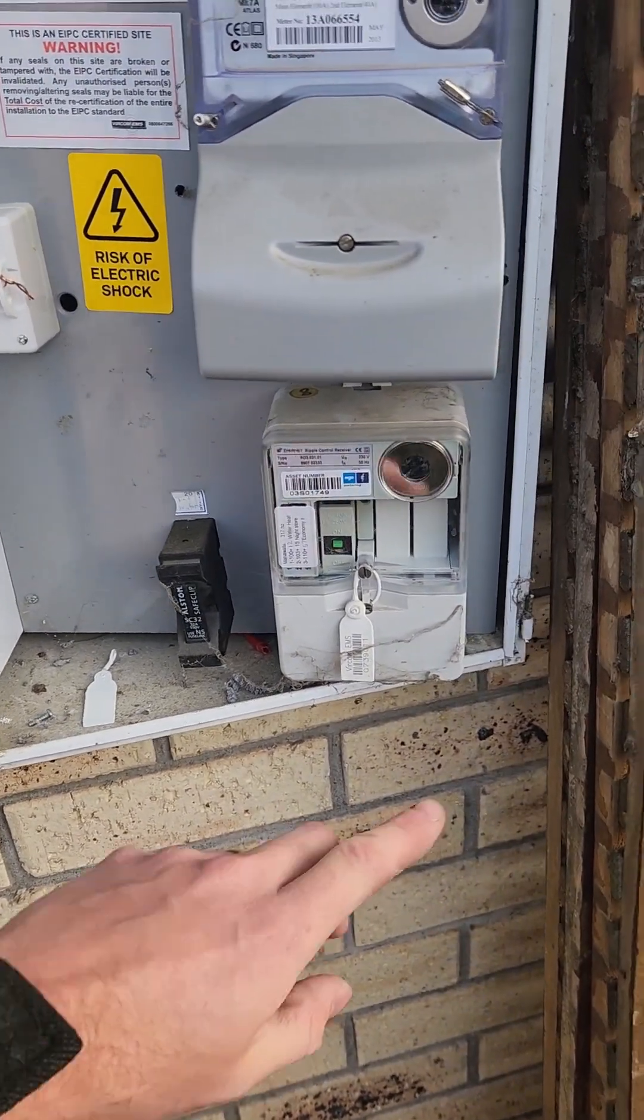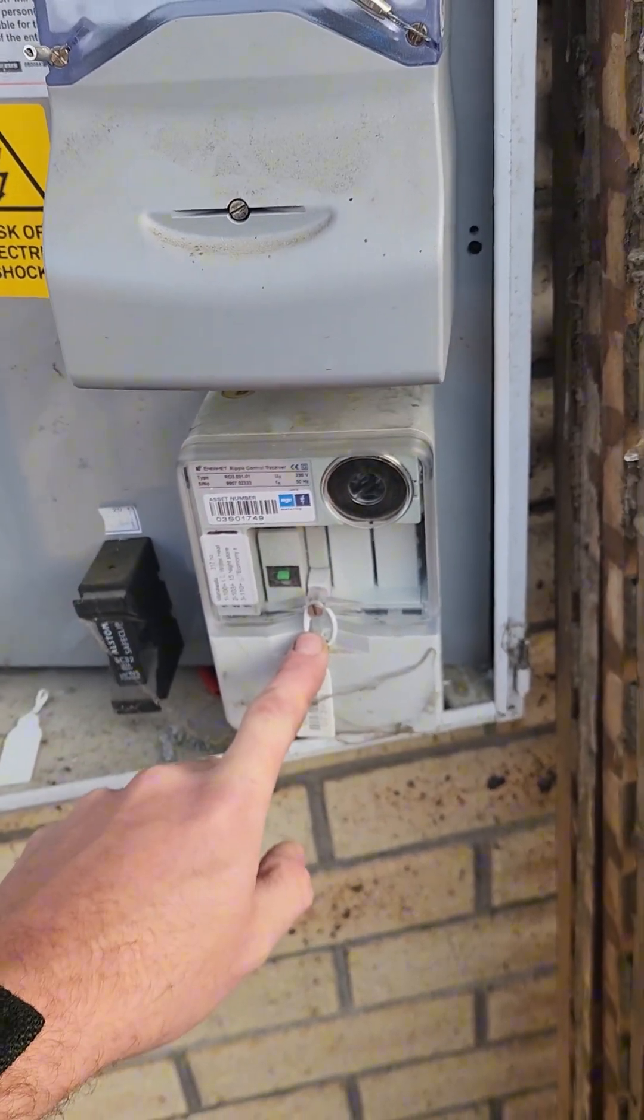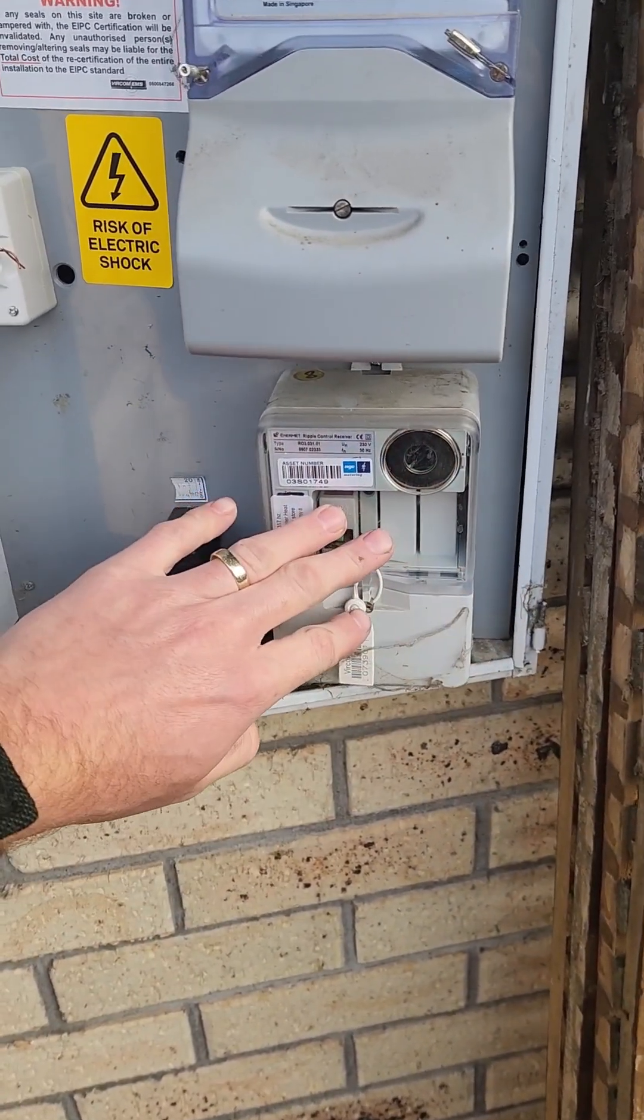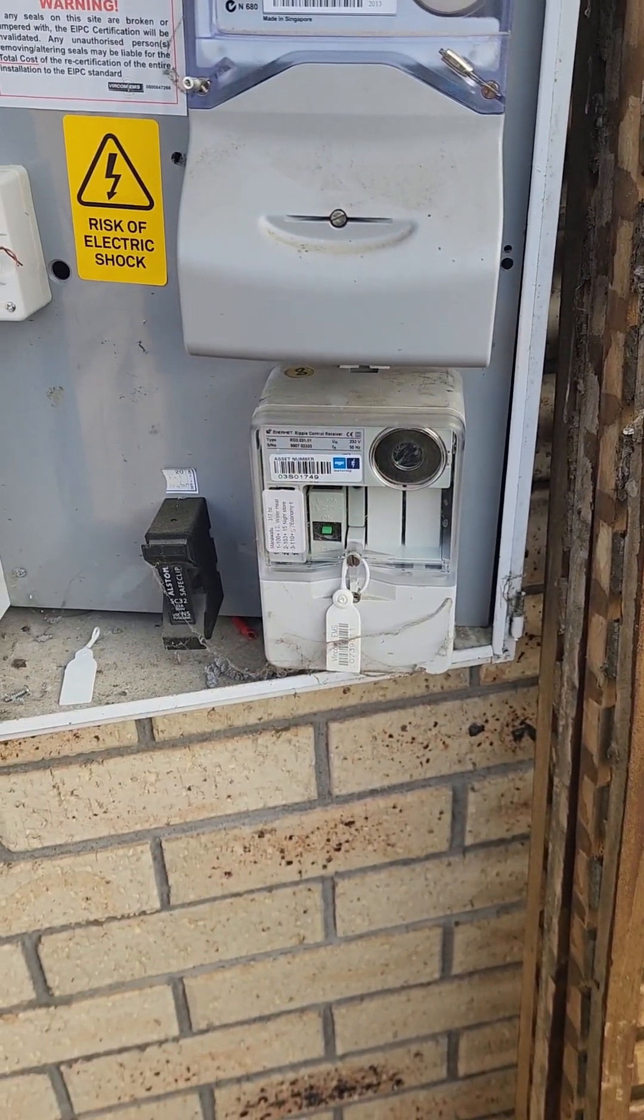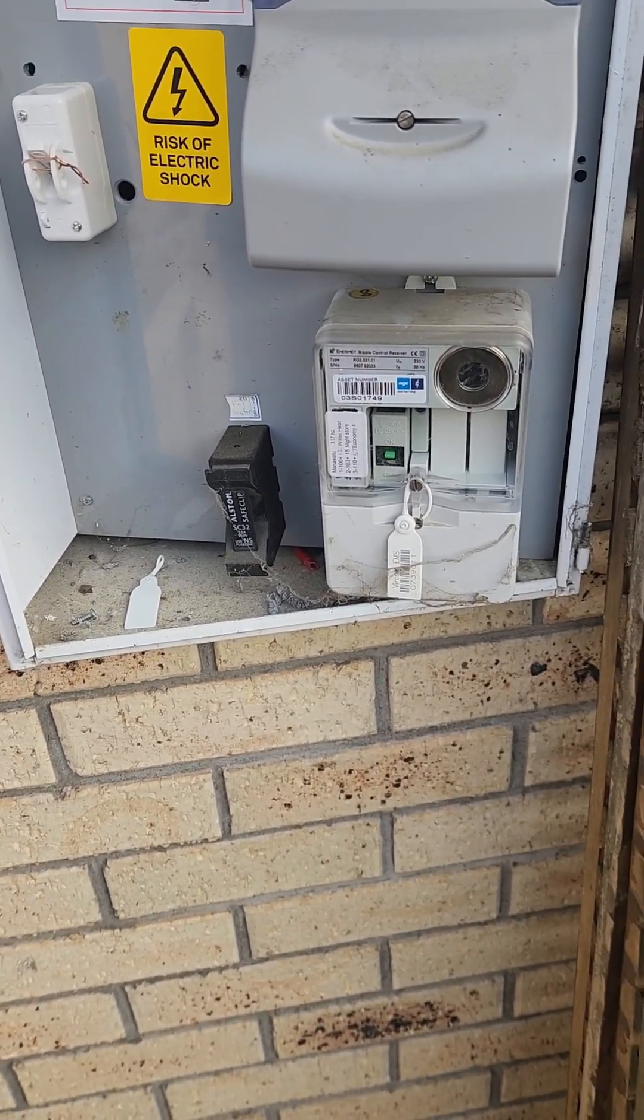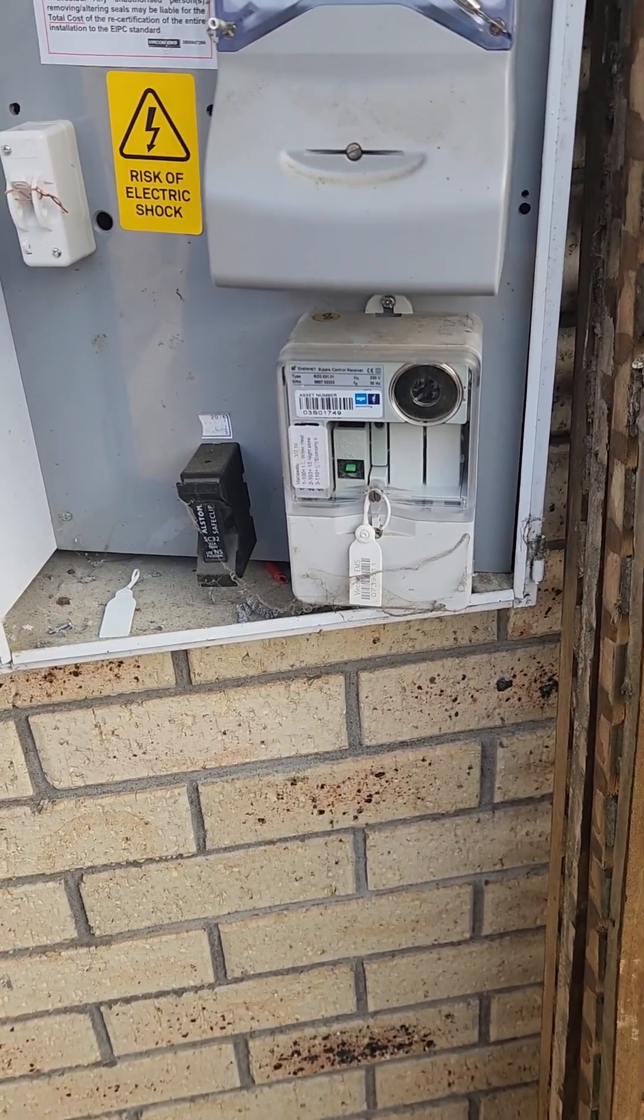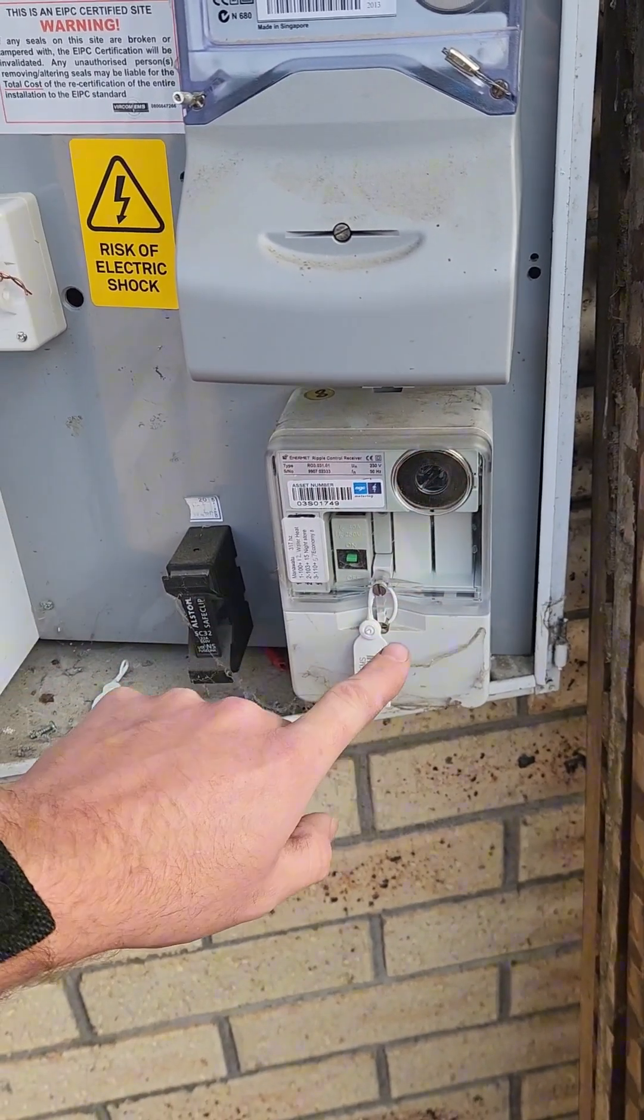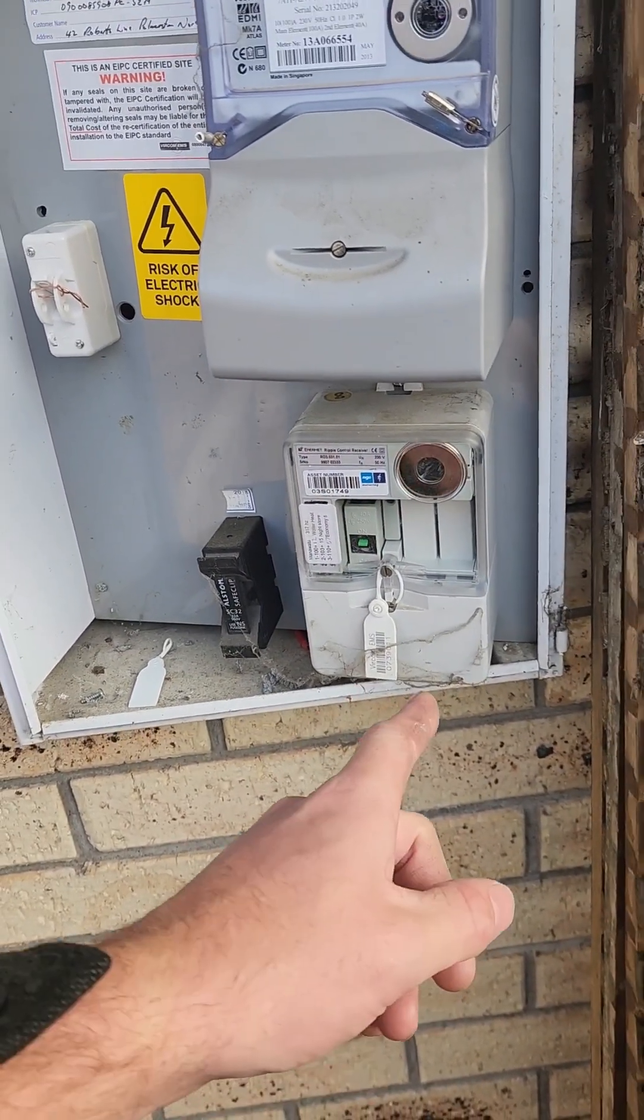This video is going to have a bit of information in it. This here is a ripple control so this controls your hot water and most houses will have them. We start to take them out when we put a hot water diverter in for solar but what this device does is it turns your hot water cylinder on and off and the power company controls that. The reason that they control it is when everybody gets home at night everybody turns all of their appliances on and it puts quite a lot of stress on the electrical grid. So they can use these ripple controls to turn off your hot water cylinder and when they turn the hot water cylinder off it just alleviates some of that stress on the system. So if you ever wondered what that's for that's what it does.